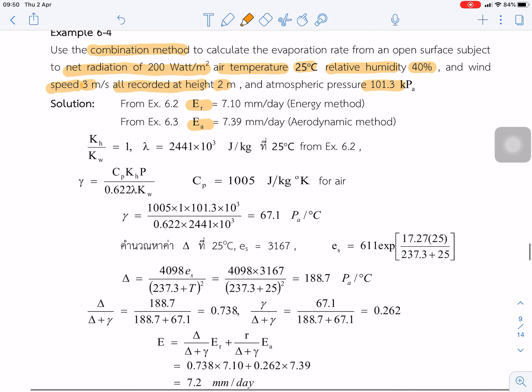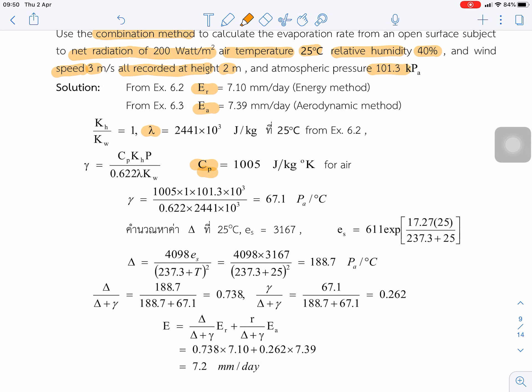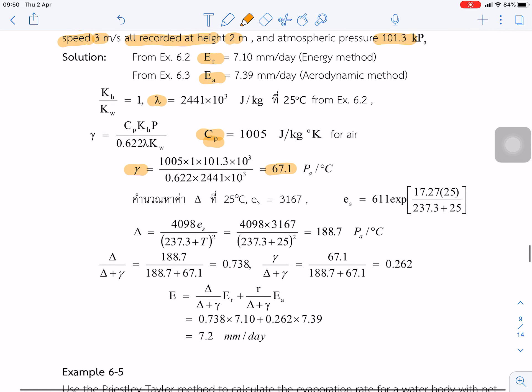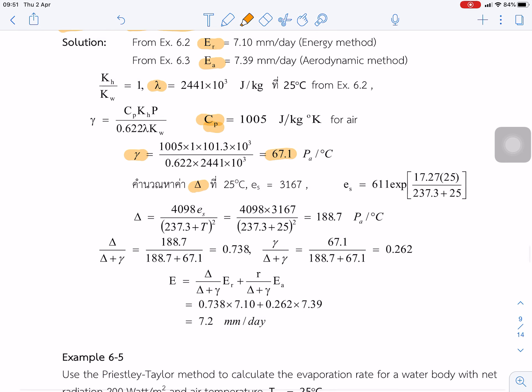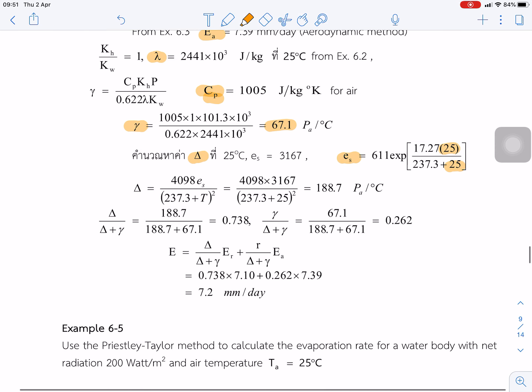So we get Er from the energy method from previous example and Ea from aerodynamics method from previous example. We estimate the latent heat of vaporization and Cp is a constant. So we substitute to find gamma. We got gamma equals 67.1 Pa per degree Celsius. Next, we find delta. We estimate es first from temperature and substitute in the equation of delta. We got delta is about 188.7 Pa per degree Celsius.